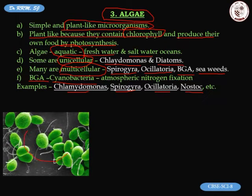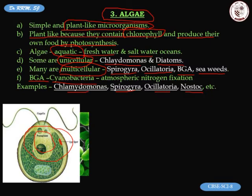If we take chlamydomonas and observe it under a less powerful microscope we see clusters, but under a high-power microscope we see its detailed structure. Chlamydomonas has a cup-shaped chloroplast containing a lot of chlorophyll. It is oval-shaped with two flagella, one on the right and one on the left — an easy diagram to draw.